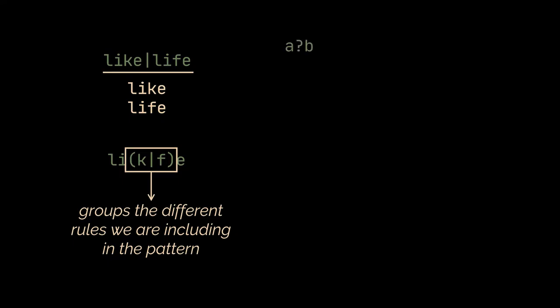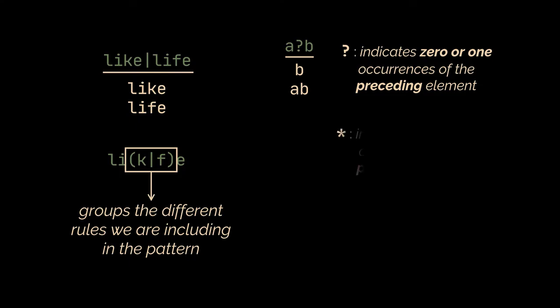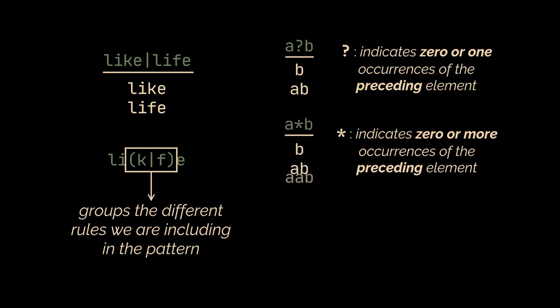Take the following pattern as an example: A question mark B. This one matches both the strings AB and B, as the question mark indicates zero or one occurrences of the preceding element. On the other hand, the asterisk indicates zero or more occurrences of the preceding element. So for example, A asterisk B matches B, AB, AAB, and so on.